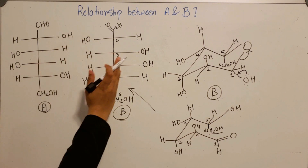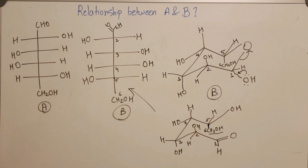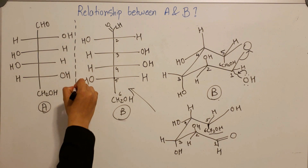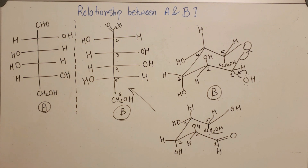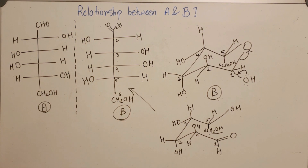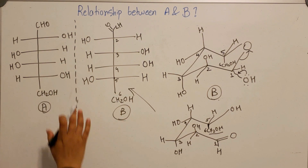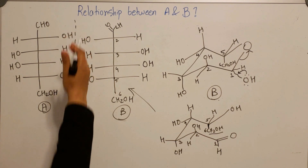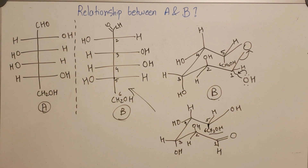Now let's make a comparison between A and B. Drawing a mirror between them, these two are nothing but enantiomers — non-superimposable mirror images of each other. So the answer is: the relationship between A and B is that they are enantiomers.